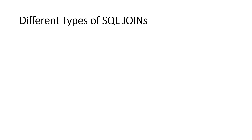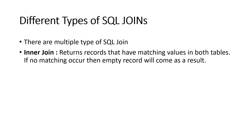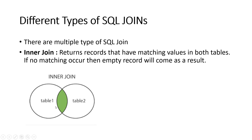There are multiple types of SQL joins. First, INNER JOIN returns records that have matching values in both tables. If no matching occurs then an empty record will come as a result. INNER JOIN just returns the common rows between both tables — the matching rows on the base of a condition. It is the same as intersection in mathematics.